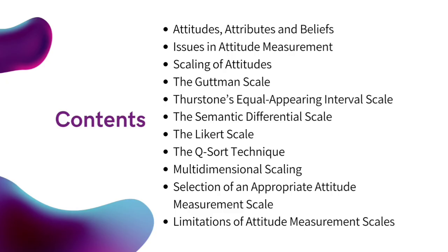So, some of the topics we will be talking about are: what is meant by attitude, attribute and belief; what are the issues in attitude measurement; how we scale attitudes; the Guttman scale; Thurstone's equal appearing interval scale; the semantic differential scale; the Likert scale and the Q-sort technique; multi-dimensional scaling; how to select the appropriate attitude measurement scale; and a few limitations of attitude measurement scales. Let's get started.